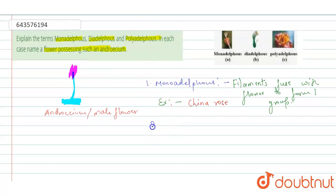And the second term is diadelphous. Di means two. Adelphous condition is used for stamen.